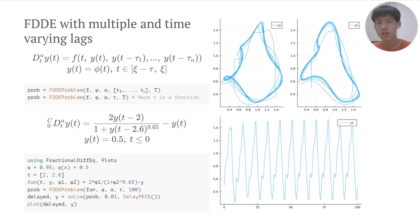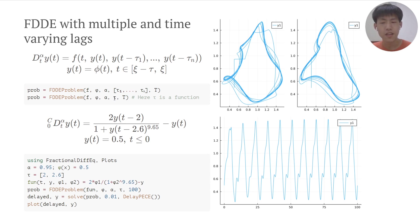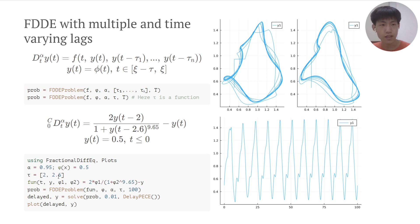FractionalDiffeq.jl also supports FDDEs with multiple and time-varying lags. You can define the multiple-lags problem by inputting the different lags, and for time-varying lags we need to pass tau as a function. In this example, we pass the multiple lags as an array, construct our problem, solve our problem, and get the phase portrait and plot.